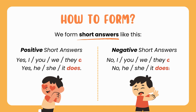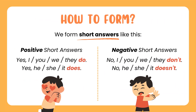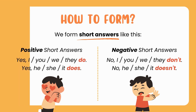How to form? We form short answers like this. Positive short answers: Yes, I/you/we/they do. Yes, he/she/it does. Negative short answers: No, I/you/we/they don't. No, he/she/it does not.